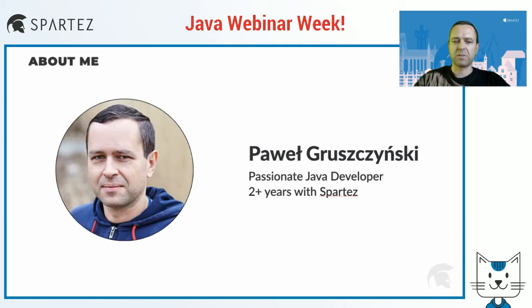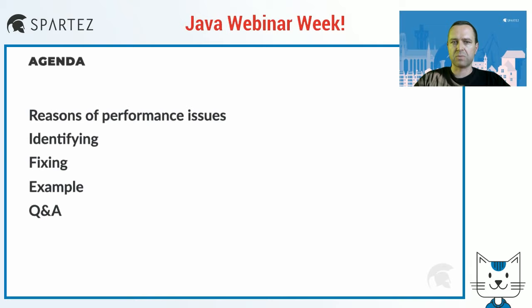Welcome, everybody. It's time to tell you a performance improvement story. My name is Paweł Gruszczyński. I'm a passionate Java developer, mostly focused on the backend with almost 20 years of experience, and I've been with Spartas for two years already. In this presentation, I will briefly talk about performance — first, some reasons of performance issues, then how to identify them, and finally how to fix them.